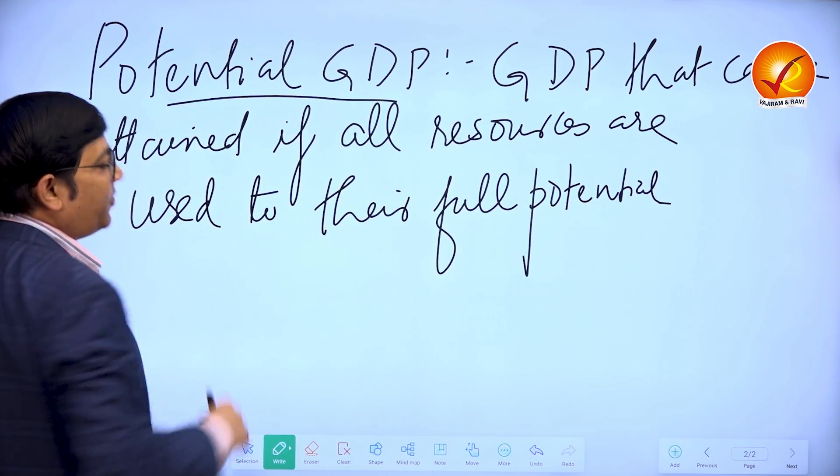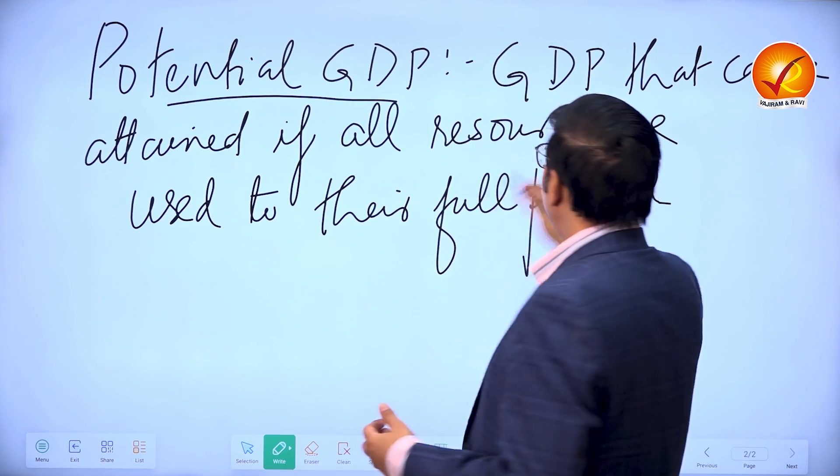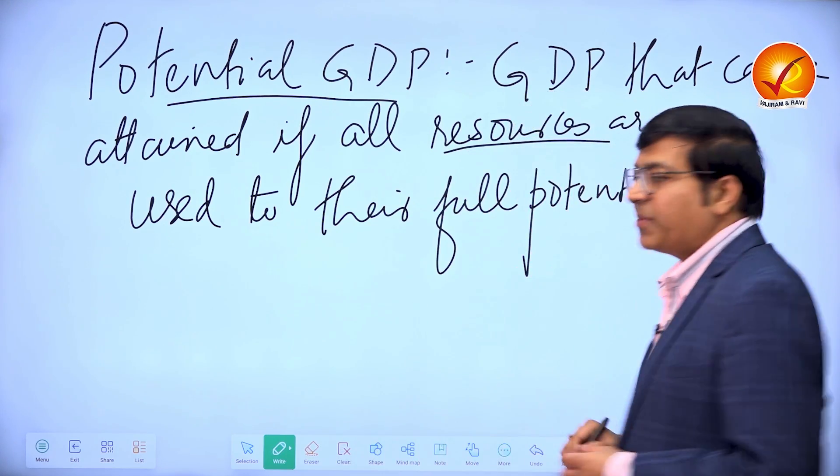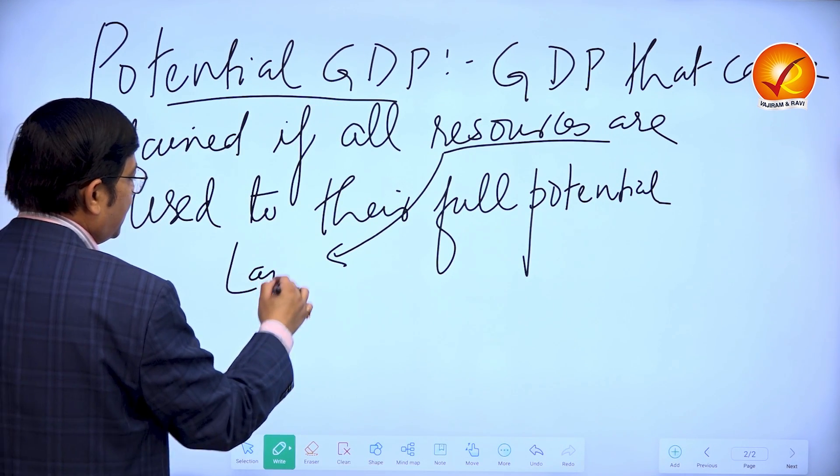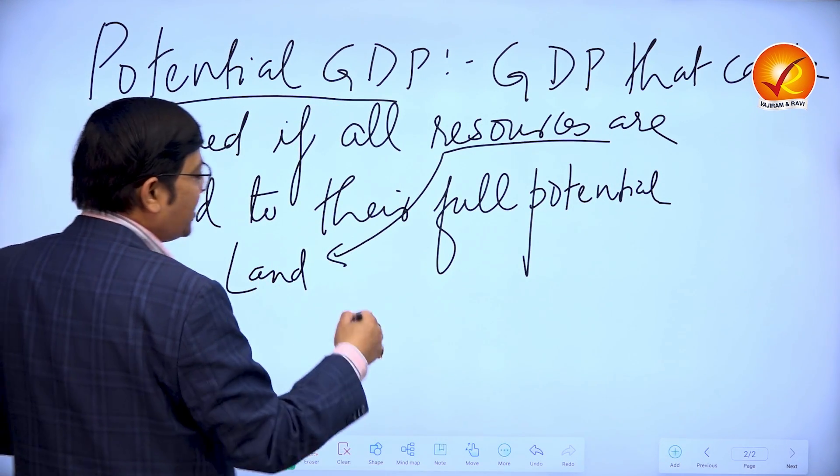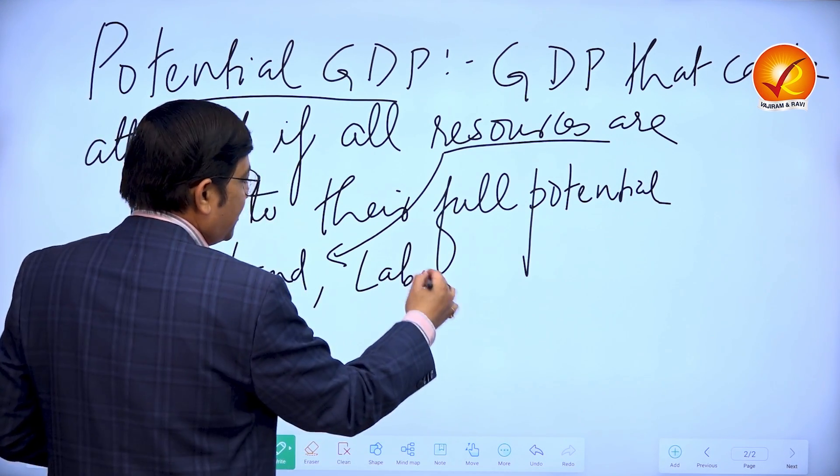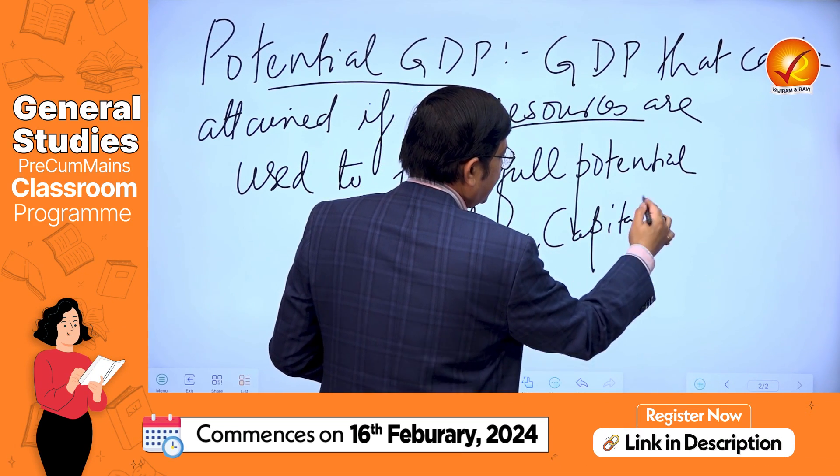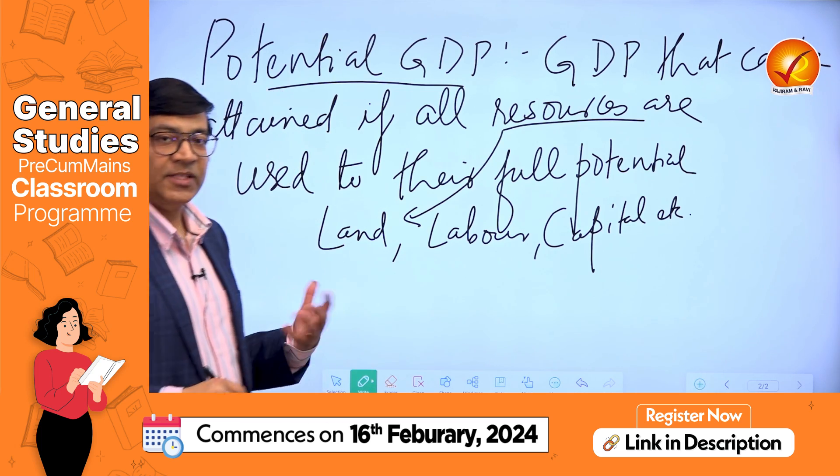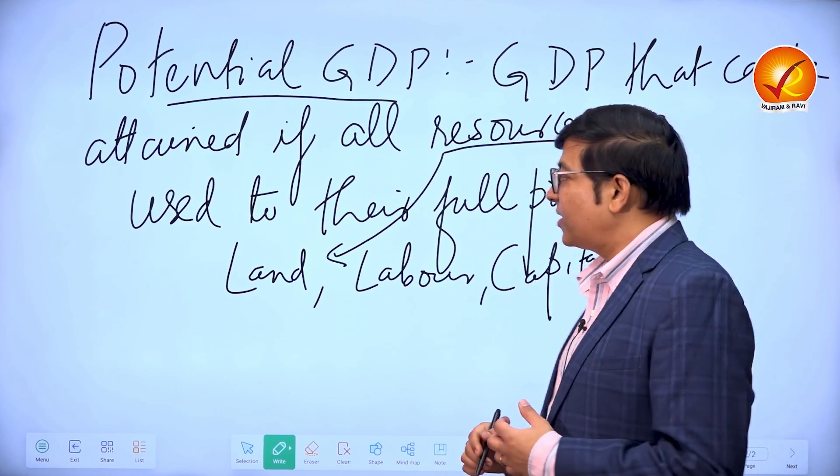So basically GDP or value of production depends upon resources. Resources means what? Resources can be many things like land or other natural resources, labor, capital, etc. This is something which we also call factors of production in the context of formal economic theory.